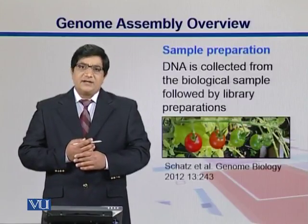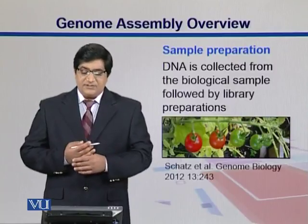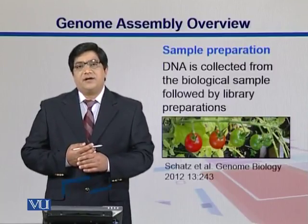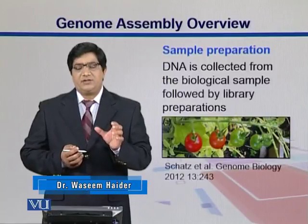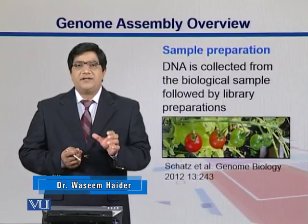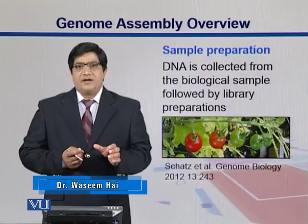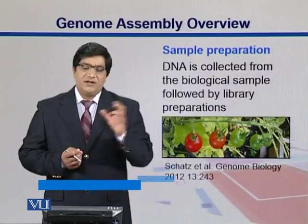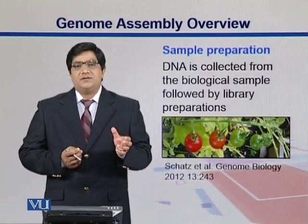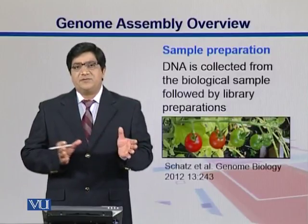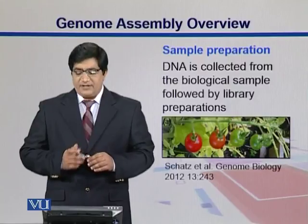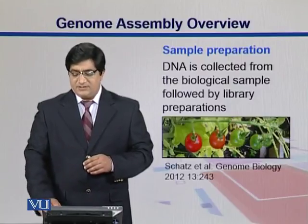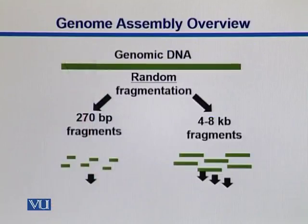DNA is collected from the biological samples, which are then followed by library preps. We talked about library preps — we take those fragments, we break them, we add adapters and we then have some quality controls. For example, if the sequencer is giving you 100 base pair reads, your fragments should be more or less equivalent to that length. Those kinds of things are there in sample preparation. Here is an overview of this sample preparation.